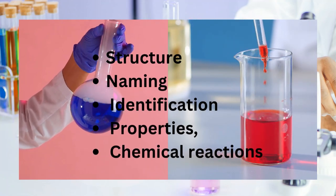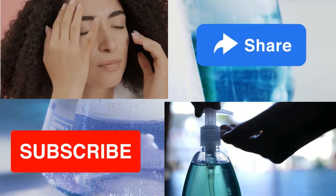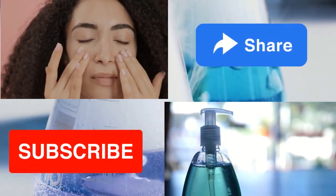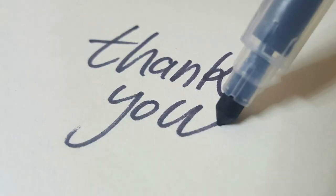That's it for our discussion on carboxylic acid as a functional group in organic chemistry. We covered the structure and naming of carboxylic acids, their identification properties, and chemical reactions. Thanks for watching.